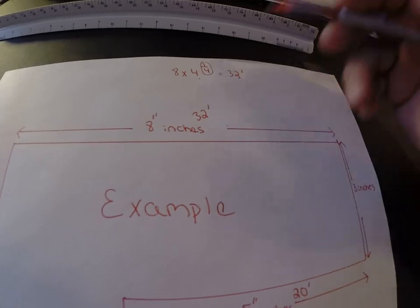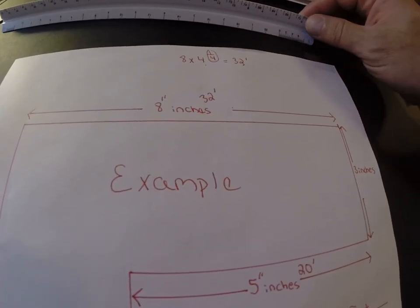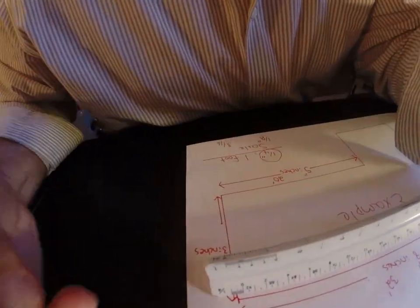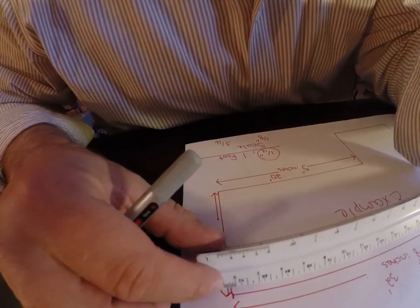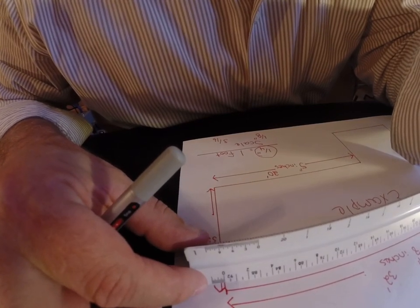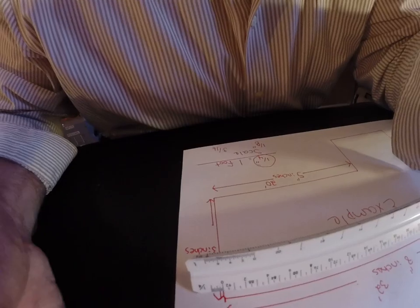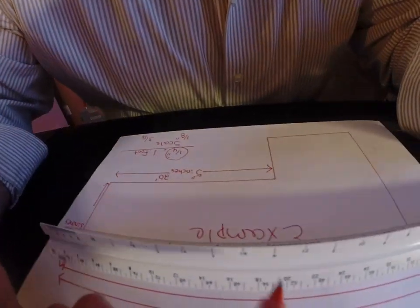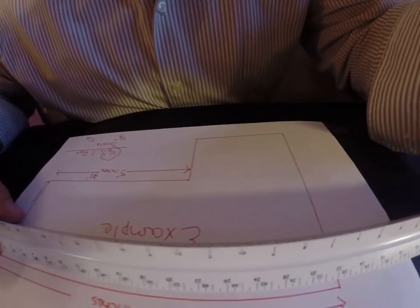So if that's true I would take my quarter inch scale, let me turn this thing around, and I would put this zero edge, this edge has to be on the end of my line. There we are, there's the edge of the building or the edge of the wall, that's my starting point. And I'm going to look down, there's one foot, two feet. Well at the very end when I get all the way down to the end...